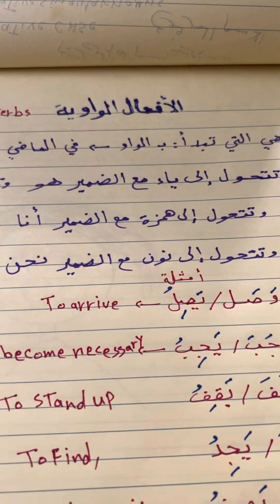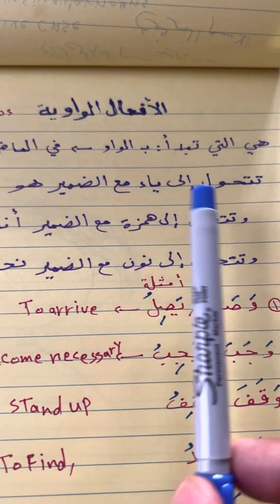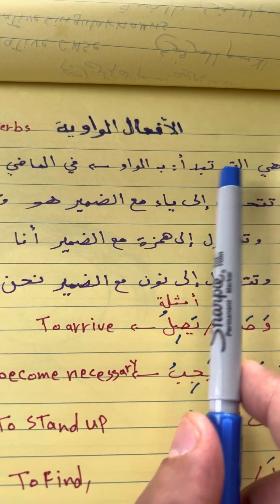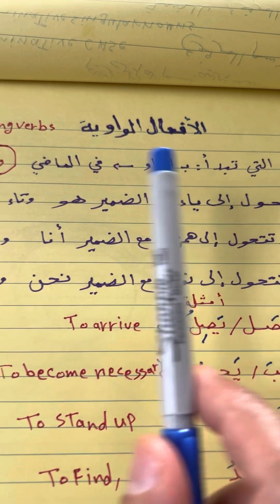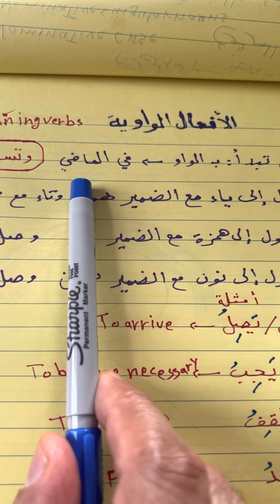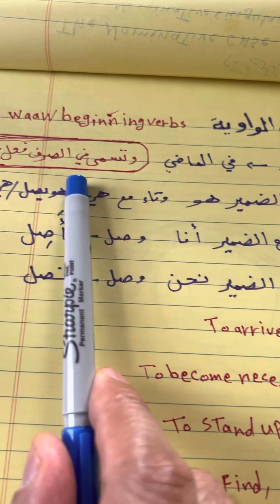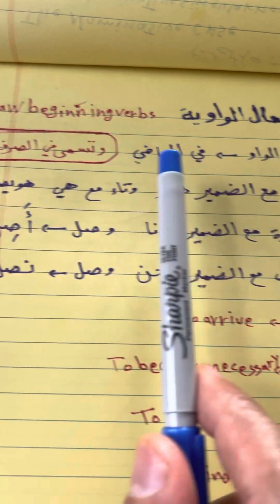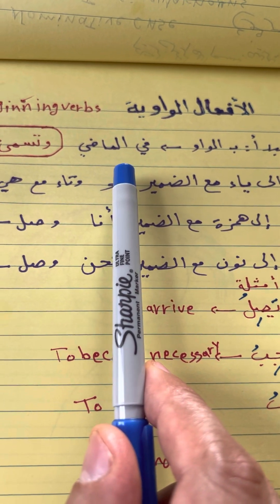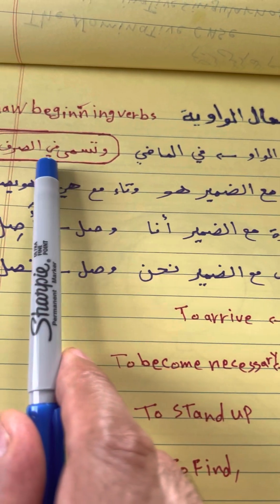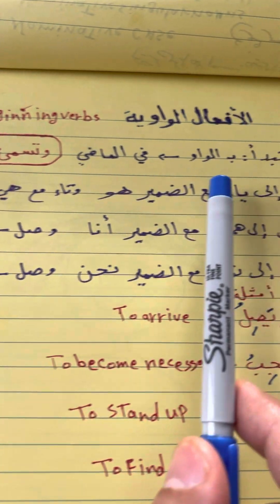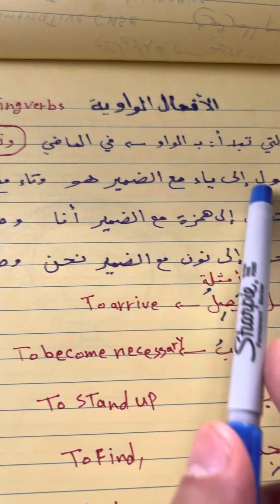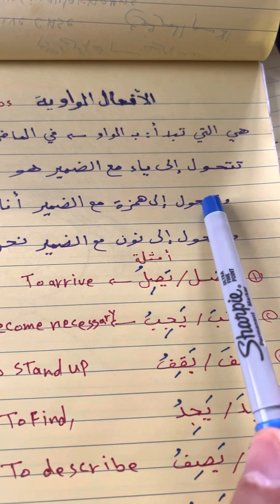We have some verbs in Arabic that start with waaw in the past tense. In morphology, this type of verb is called mithal, which starts with the fa'il letter being waaw. Most of them start with waaw.